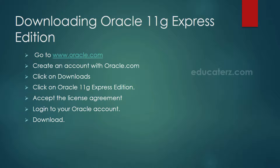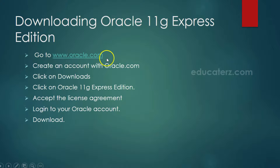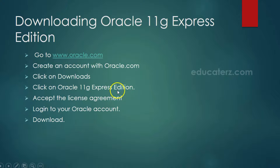First of all, open a browser — either Mozilla Firefox, Internet Explorer, or Chrome, any of your choice. Go to www.oracle.com, create an account, and click on Downloads. Click on Oracle 11G Express Edition, accept the License Agreement, log in to your account, and download. Once you download, you can install it.